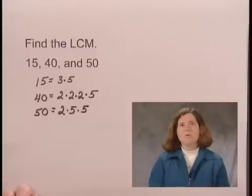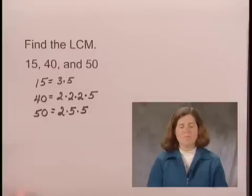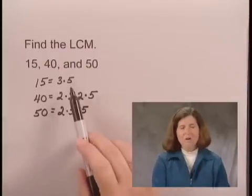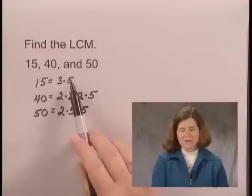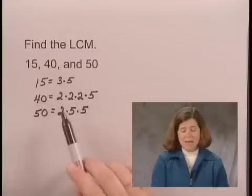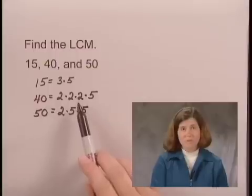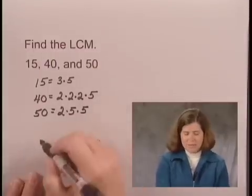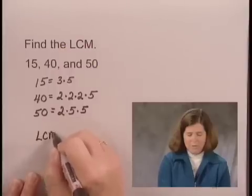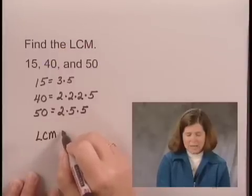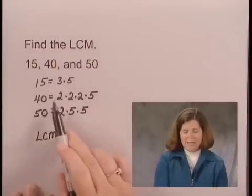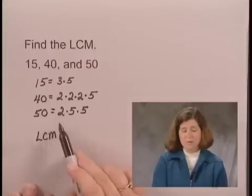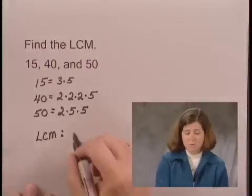Now we can use those prime factorizations to find the least common multiple. Any multiple of 15 has to contain factors of 3 and 5. Any multiple of 40 has to contain three factors of 2 and one factor of 5. For our least common multiple, for 40 it has to contain three factors of 2, and for 50 it has to contain one factor of 2. We don't need four factors of 2, we just need 3.